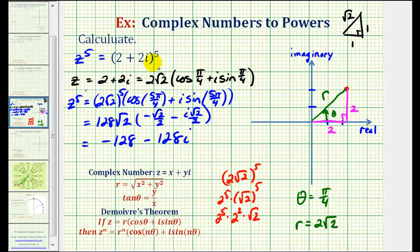This would be the complex number 2+2i raised to the fifth power. Now we can check this on a graphing calculator, as long as we're in complex mode. So let's go ahead and do that.